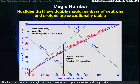Nuclides that have double magic numbers of neutrons and protons are exceptionally stable. Helium-4, having two neutrons and two protons, is in a class all by itself. It is so stable that it can be ejected from a large nucleus as a form of decay. We call this alpha decay.